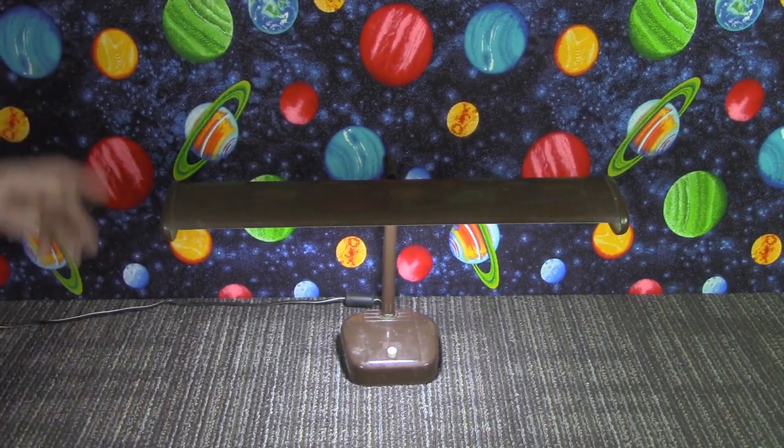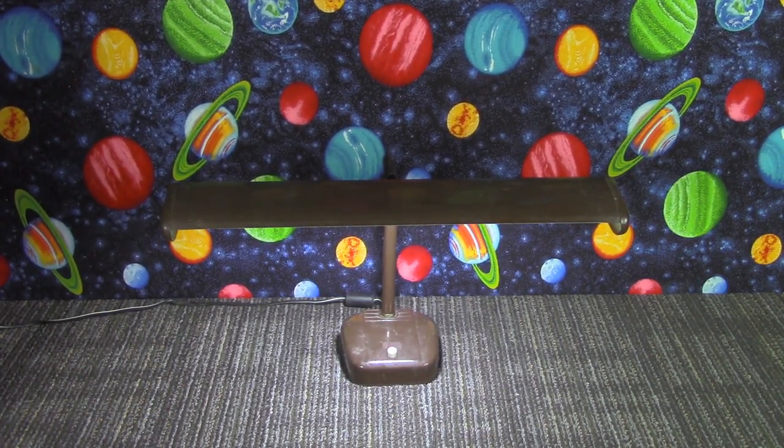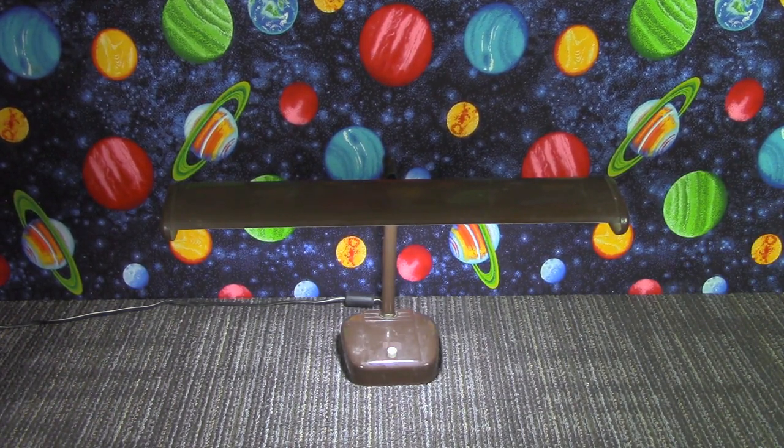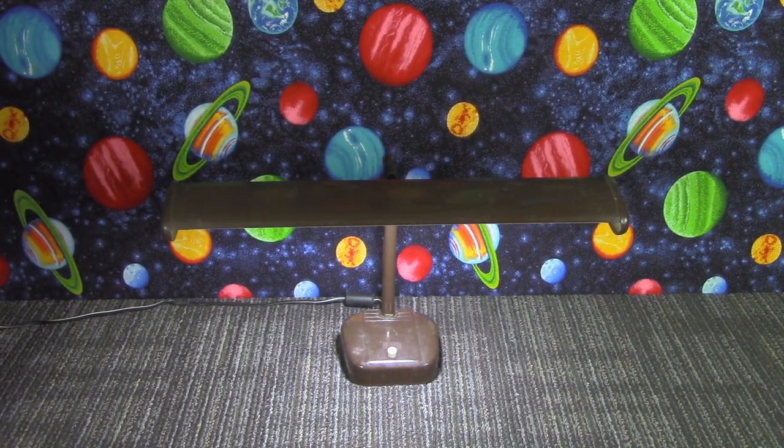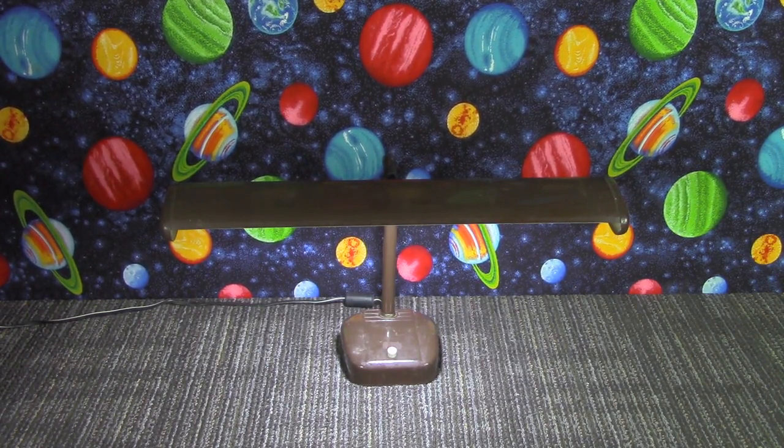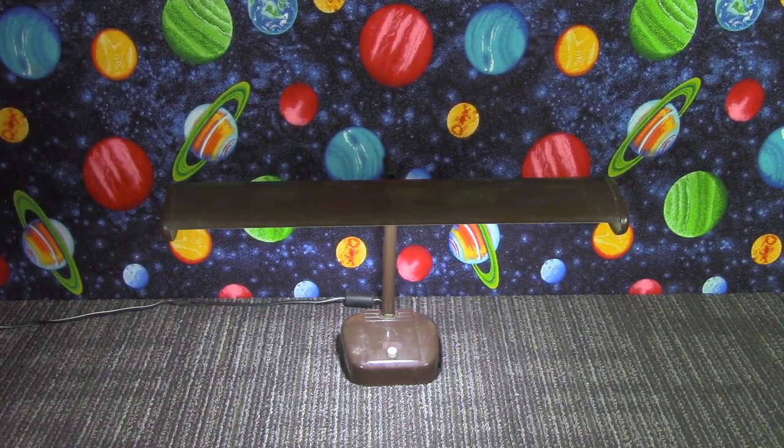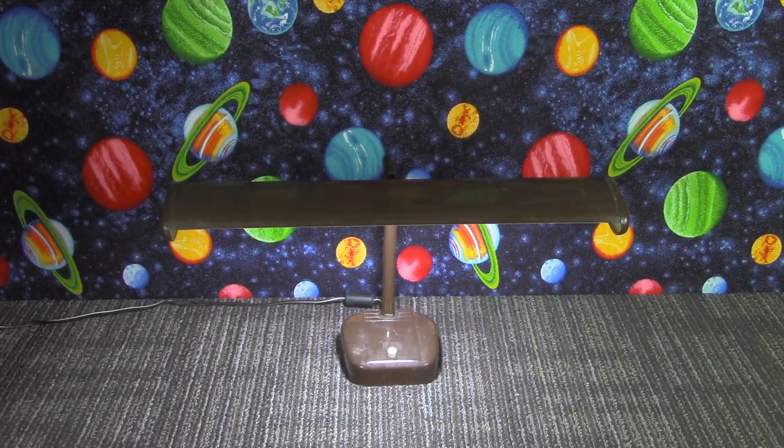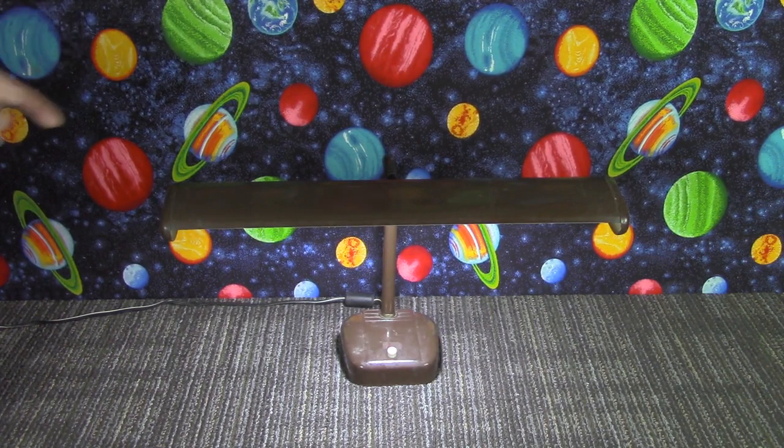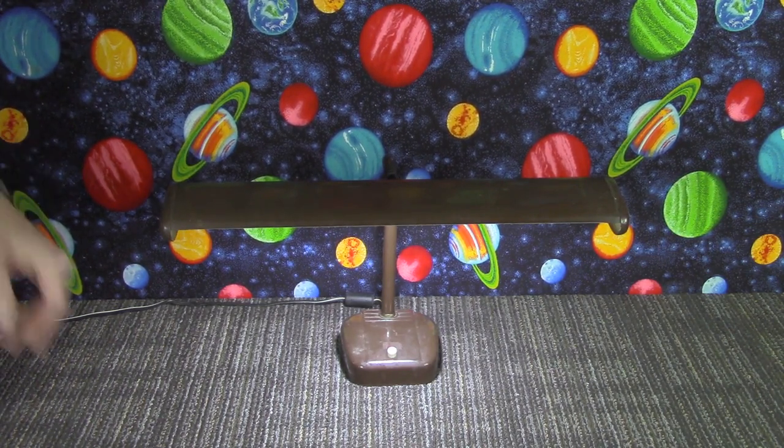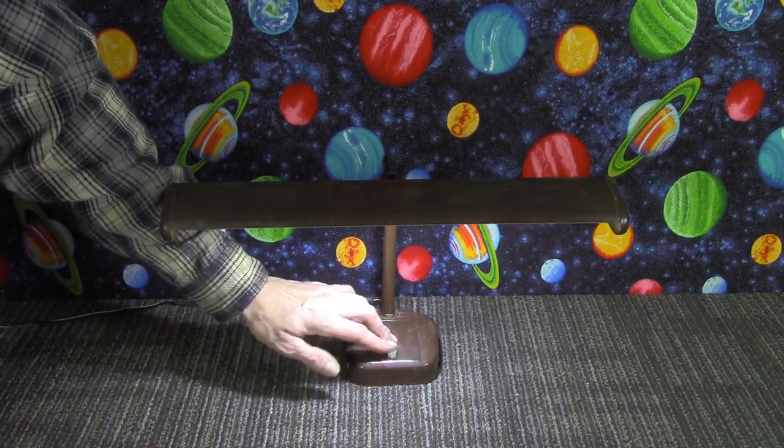Alright, so the first thing we're going to need to do is you want to gut all of the old electronics. And here is a picture, a couple pictures actually, of what it should look like when you're done. Now, the one thing you are going to want to save is the switch. I did remove it, as you can see in the picture, but that was to clean it up and make it easier to solder the wires to. But as you can see here, we did reuse that switch,